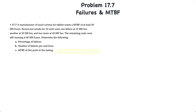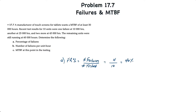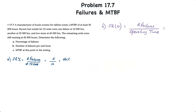The calculation for the percentage of failures is really quite simple. It's equal to the number of failures divided by the number of units tested. In this case, we have four failures over 10 units tested for a total failure rate, or percentage of failures, of 40%.